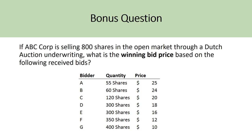For today's bonus question: if ABC Corp is selling 800 shares through a Dutch auction underwriting procedure, what is the winning bid price based on the following received bids — Bidders A through G with their quantities and prices? Similar to the example we worked through, find the cutoff price at which the supply of 800 shares is met by demand from the competitive bids. Please share your answer in the comment section, and like and subscribe for more videos. Thank you so much.